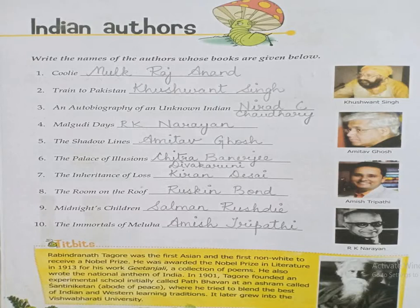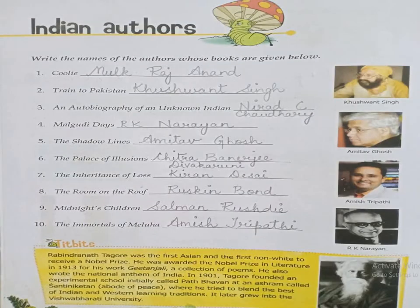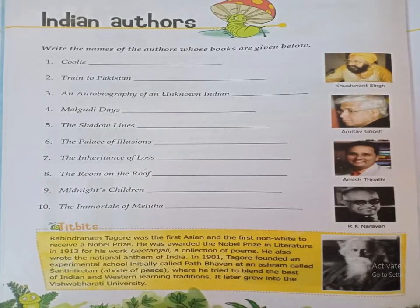Children, you can write down the correct answers from this answer key so that you don't make mistakes in your book. The third book is An Autobiography of an Unknown Indian, and the author is Nirad C. Chaudhuri. This unknown Indian about whom this autobiography was written was a citizen of Bangladesh.